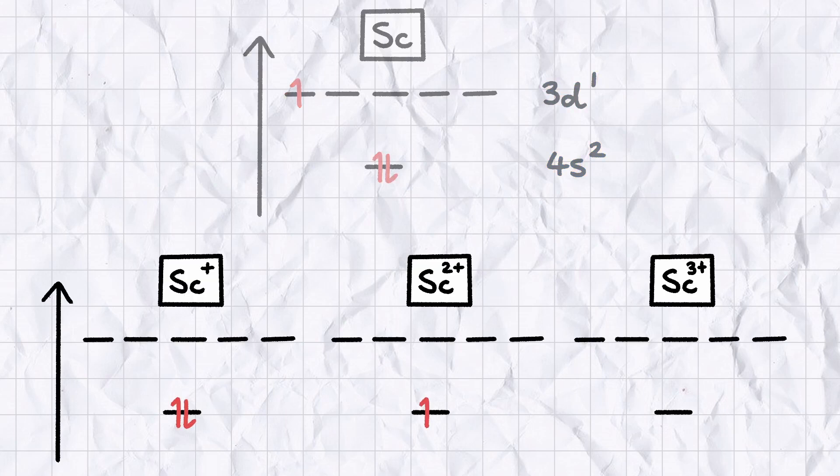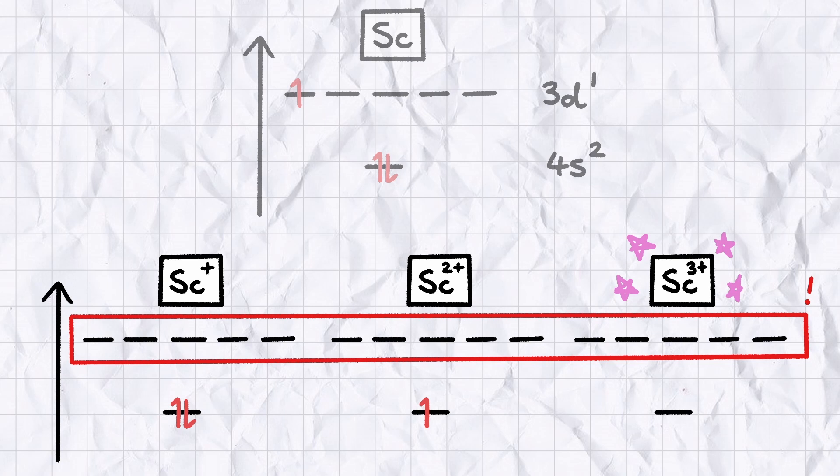The only stable Scandium ions are Scandium+, Scandium-2+, and by far the most common, Scandium-3+, all of which have empty, not partially filled, D-Orbitals.